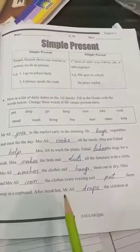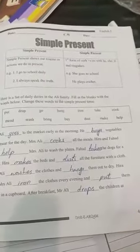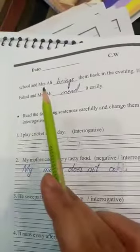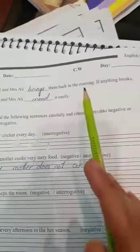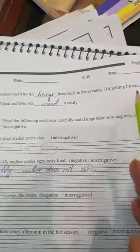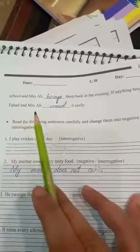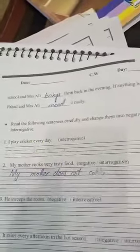Hira and Mrs. Ali iron the clothes every evening and put them away in a cupboard. After breakfast, Mr. Ali drops the children at school, and Mrs. Ali brings them back in the evening. If anything breaks, Fahad and Mrs. Ali mend it easily.